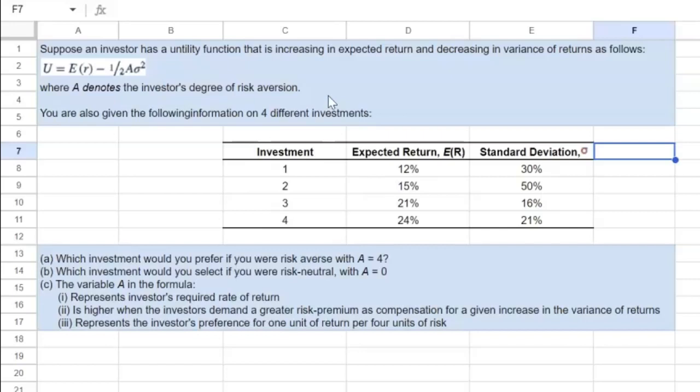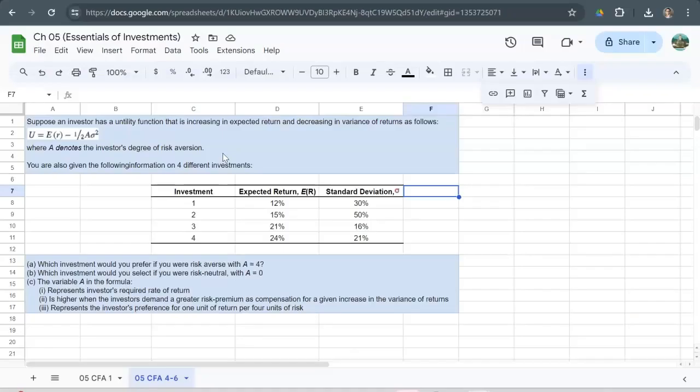So for a given level of risk or a given level of standard deviation or variance, the higher is the value of A, the more risk averse we will be and therefore the higher this negative number will be that we will be subtracting, which will decrease our utility.